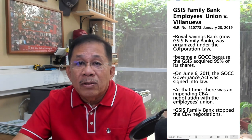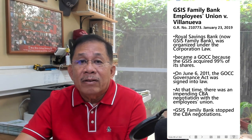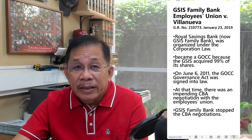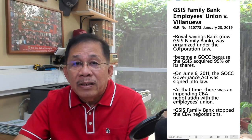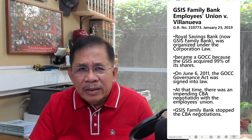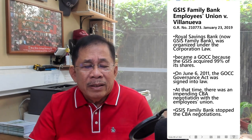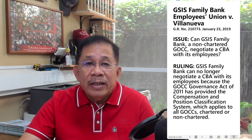In the GSIS Family Bank case, the bank was organized under the corporation law but became a government-controlled corporation when the GSIS acquired 99% of its shares. In June 2011, the GOCC Governance Act was signed into law. At that time, there was an impending CBA negotiation with the union and the bank stopped the CBA negotiations. The Supreme Court ruled that GSIS Family Bank can no longer negotiate a CBA with its employees because the GOCC Governance Act provides a compensation and position classification system applicable to all GOCCs, whether chartered or non-chartered.